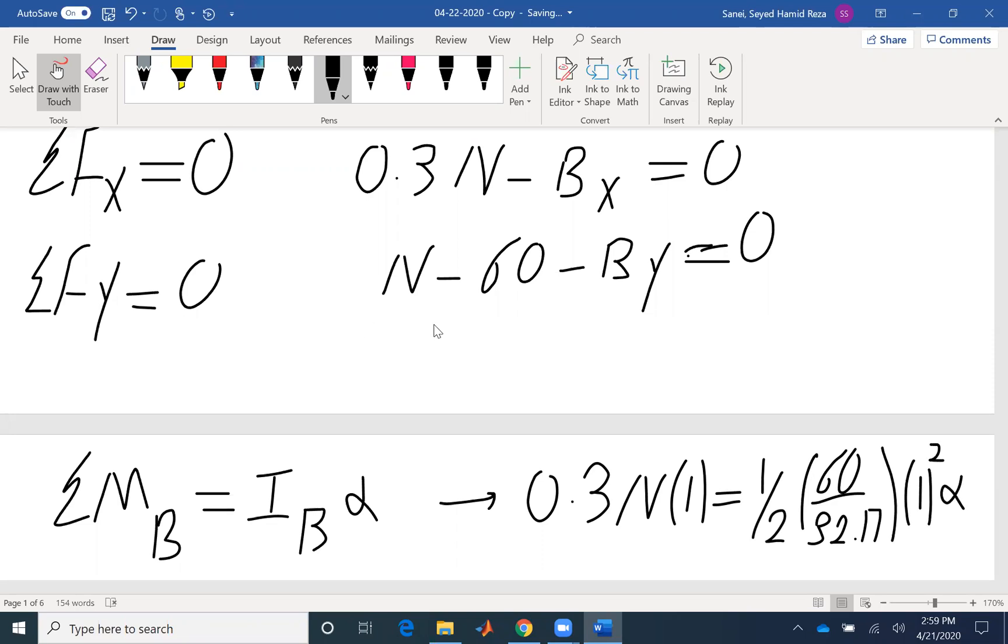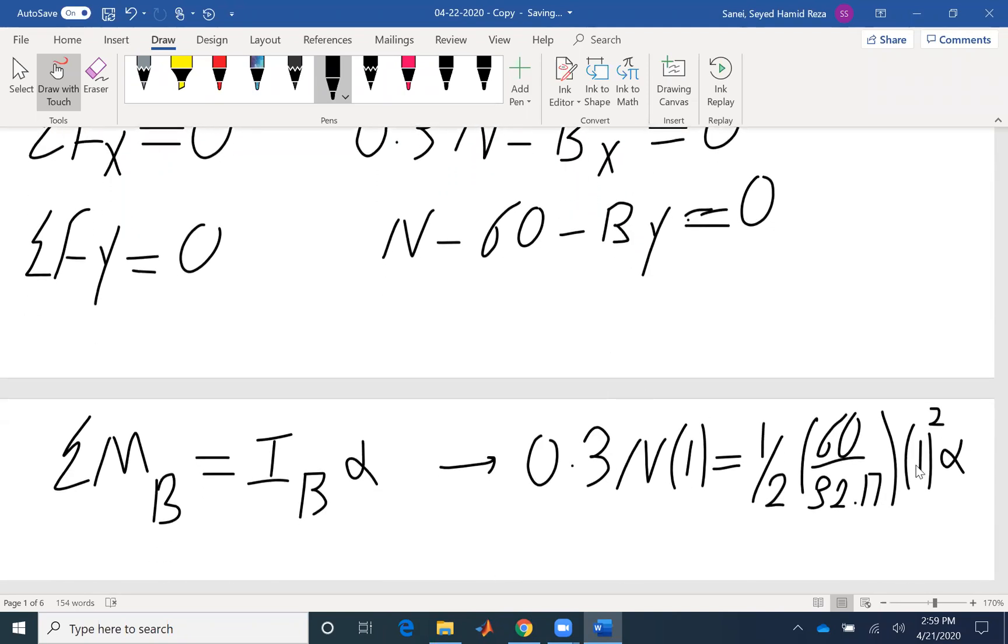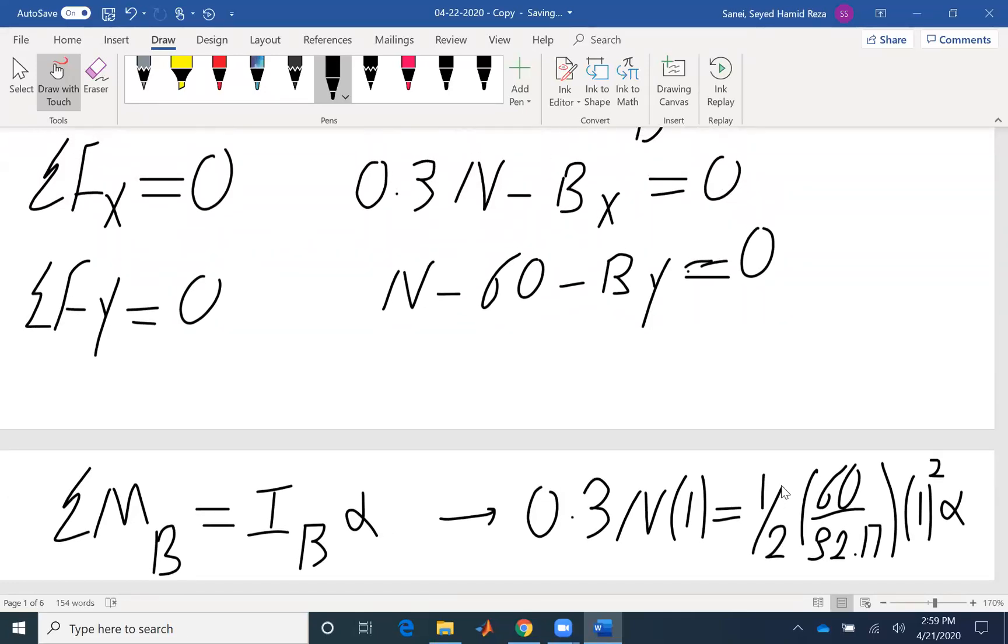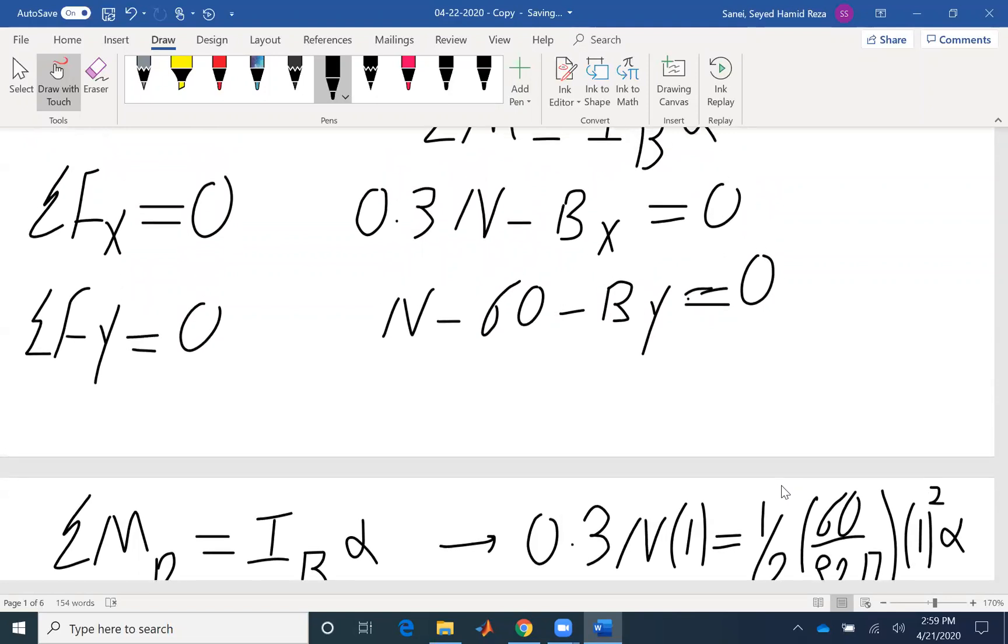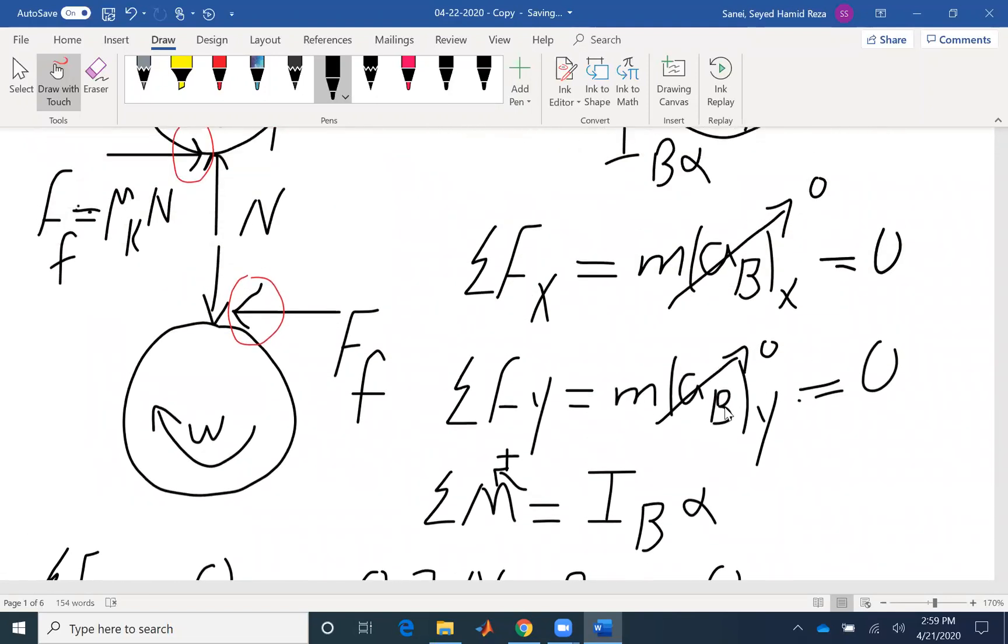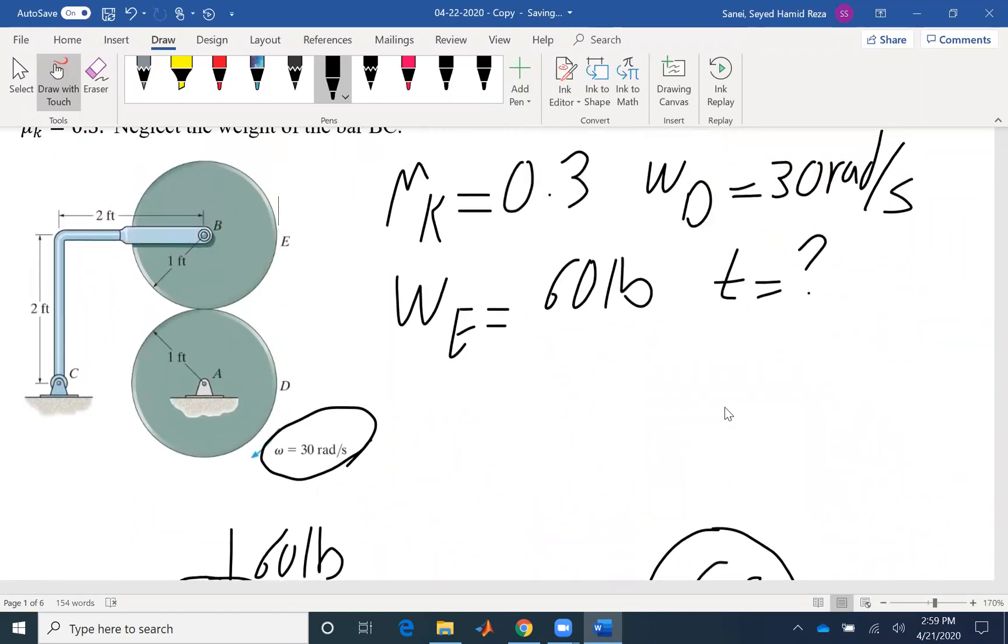If I look at my three equations, I have N as an unknown, BX as my second unknown, BY the third unknown and also alpha. I have four unknowns and only three equations. That means that I cannot solve this problem the way I set up my equation. I need to go back to see if I can find another equation for my unknowns.